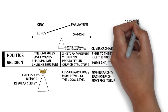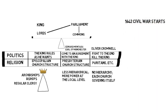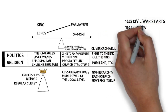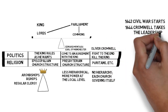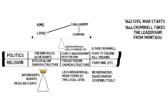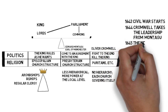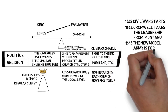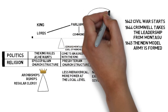The Civil War starts in 1642, and in 1644 Cromwell takes over the leadership from Montague, so the more extreme faction comes to the fore. Then in 1645, the New Model Army is formed — a very powerful army fighting for the parliament against the king.